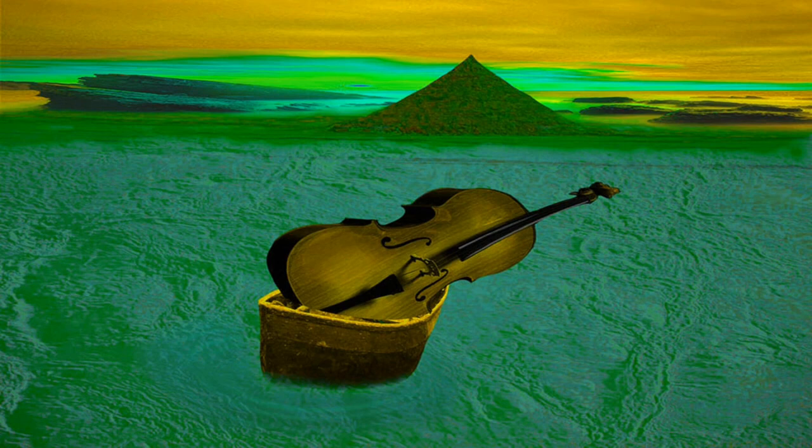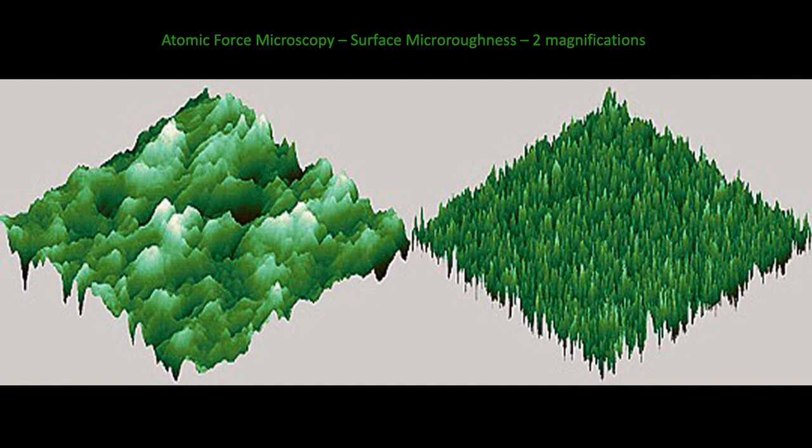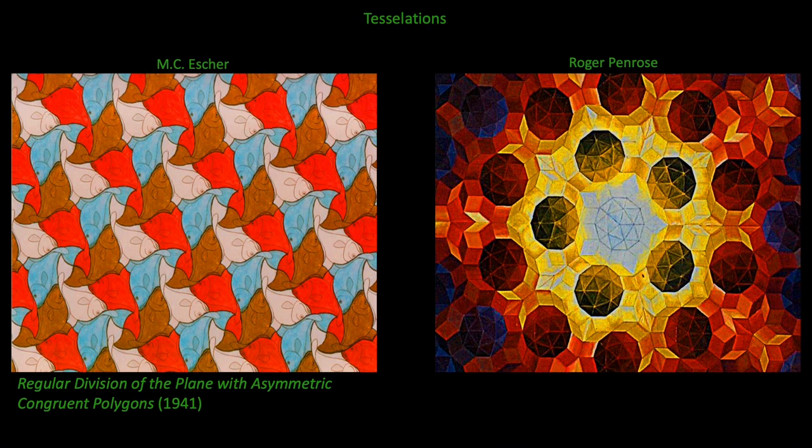This atomic force microscopy measurement at two magnifications gives us information about the material surface micro-roughness. My sample of partially etched titanium silicide was awarded Miss November for a calendar by Vico Vacuum in 2003. M.C. Escher's first paper, 'Regular Divisions of the Plane with Asymmetric Congruent Polygons' in 1941, detailed his mathematical approach to artwork.